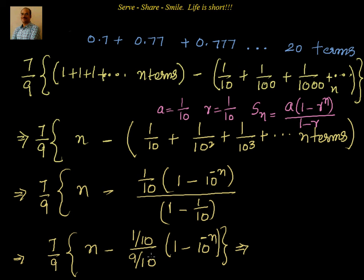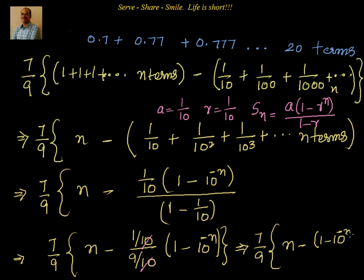We can cancel the 10 in the numerator and denominator: (1/10) divided by (9/10) simplifies to 1/9. So the expression becomes 7/9 times [n minus (1/9)(1 − 10^(−n))], which is our next simplified step.